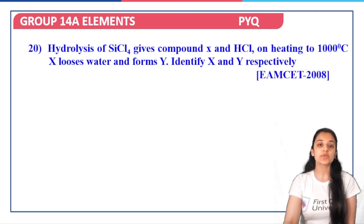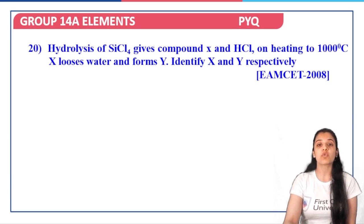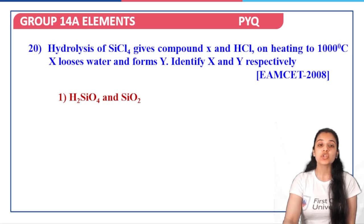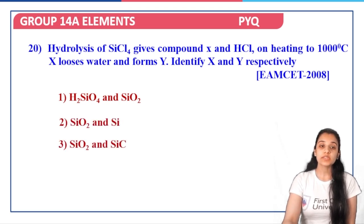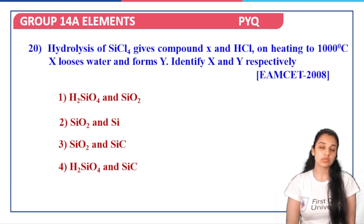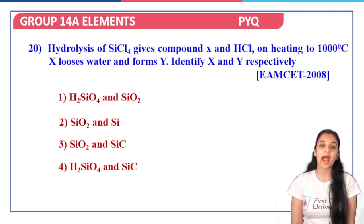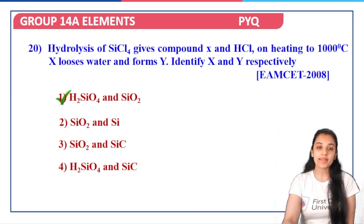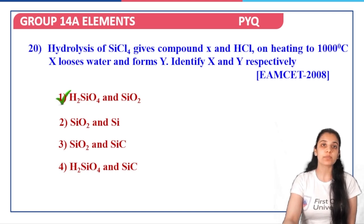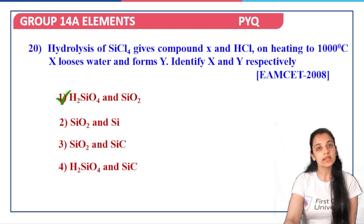Next: hydrolysis of SiCl4 gives compound X and HCl. On heating at 2000°C, X loses water and forms Y. We've seen that X is a hydrosilicate, specifically H2SiO4, and that on losing water it forms Y, which is SiO2 — silica. So option one is the correct answer.